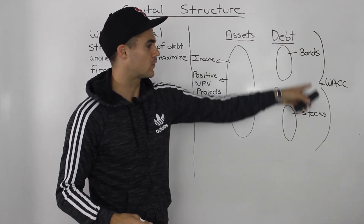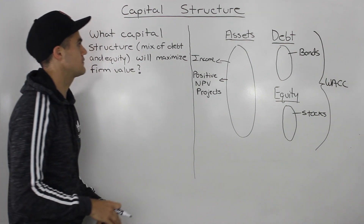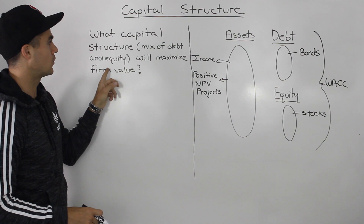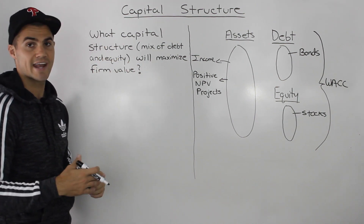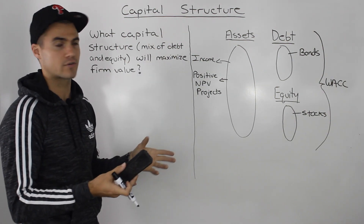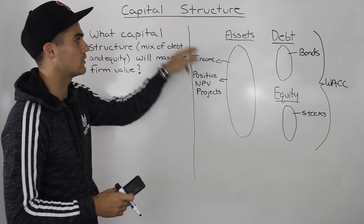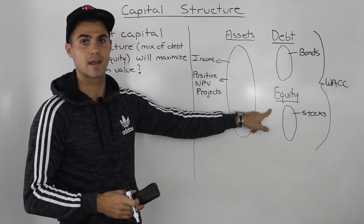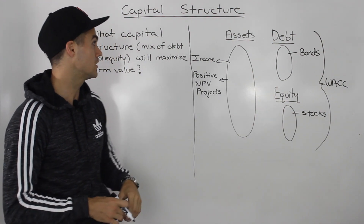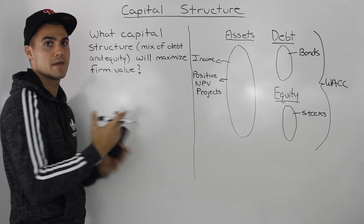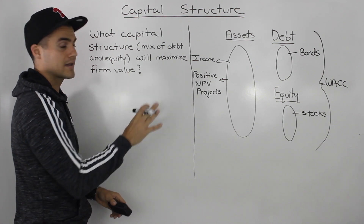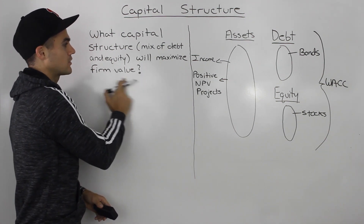In this chapter, we're going to further work with the right side of the balance sheet. More specifically, we're going to answer this question: what capital structure — what mix of debt and equity — will maximize firm value? Different companies can have different capital structures. Maybe one company has 10% debt and 90% equity, another has 30% debt and 70% equity. Capital structure is essentially the mix of debt and equity on that right side, and we want to figure out what mix will maximize firm value.